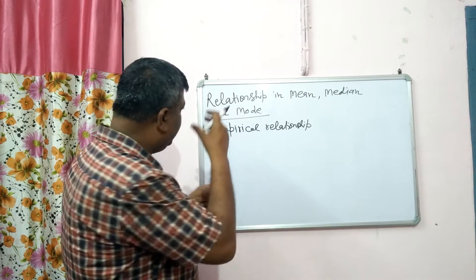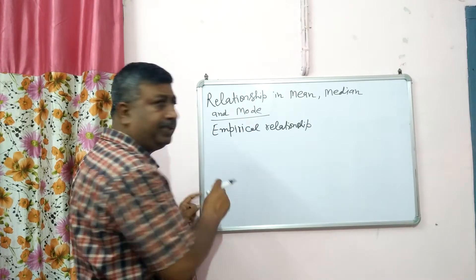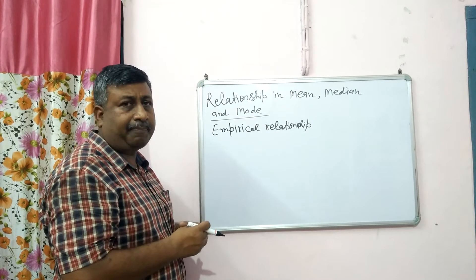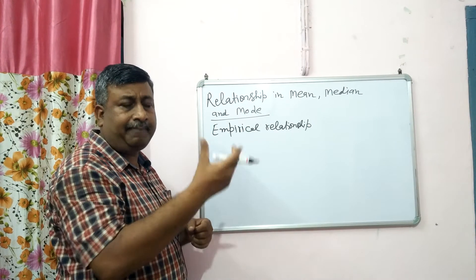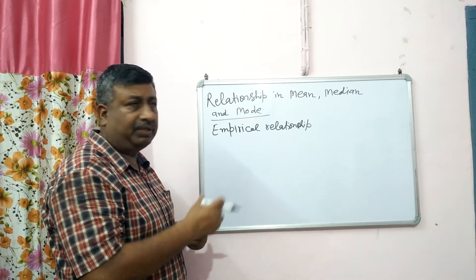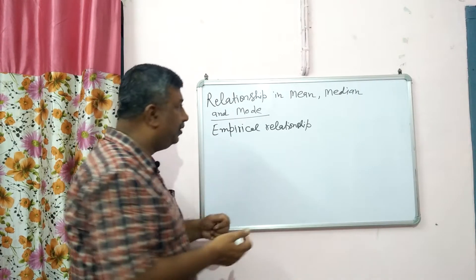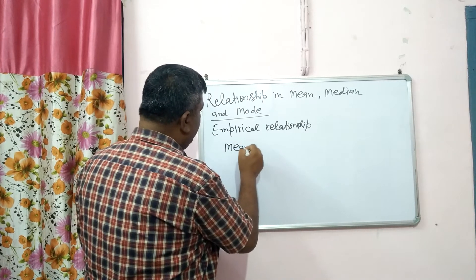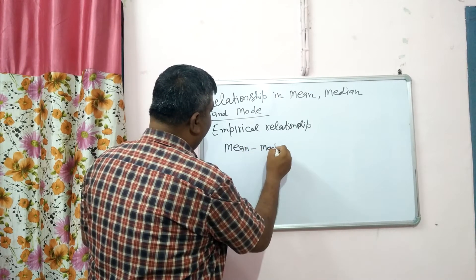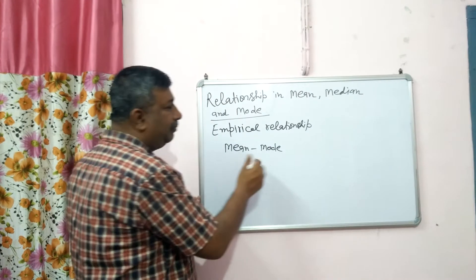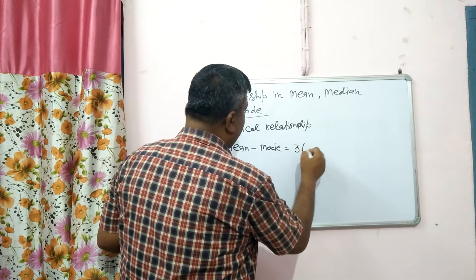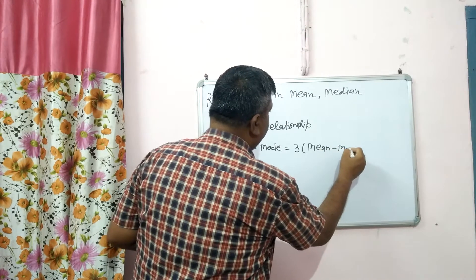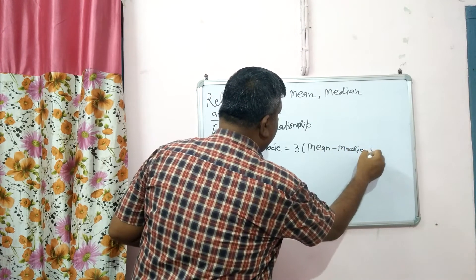In this case, the empirical relationship gives a very good and approximate value, and we can assess the value of any observation — whether it is mean, median, or mode. So this empirical relationship is that mean minus mode, the difference of mean and mode, is equal to three times the difference of mean minus median. This is the empirical relationship.